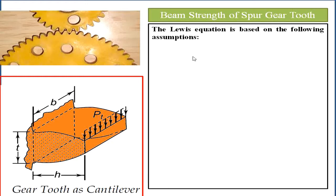The analysis of bending stresses in gear teeth was done by Wilfred Lewis in his research paper. He investigated the strength of gear teeth and submitted his work at the Engineers Club of Philadelphia in 1892. The Lewis equation is considered the basic equation in gear design.